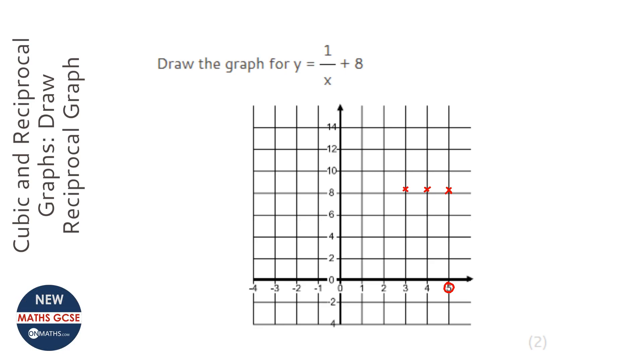Half plus 8 is 8 and a half, which should be just here maybe. 1 plus 8 is 9, which would be here. And then 1 over a half plus 8, which would be 10.